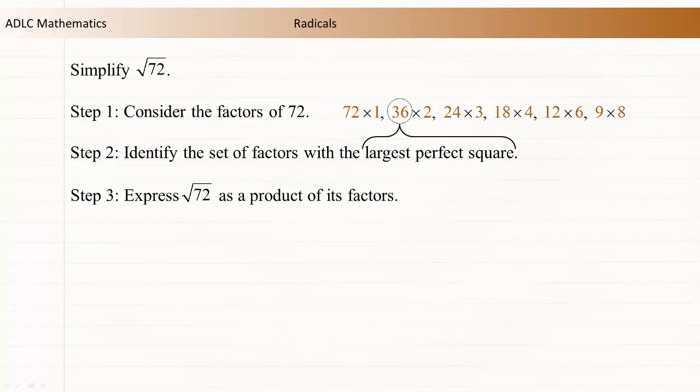Step 3: Express the square root of 72 as a product of these factors. The square root of 72 equals the square root of 36 times 2.